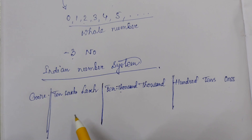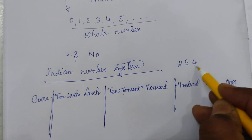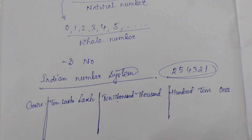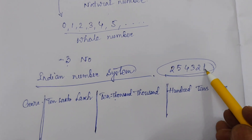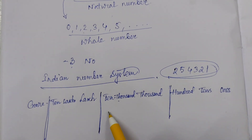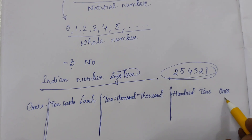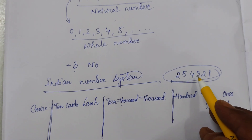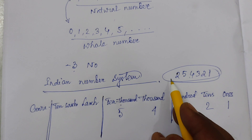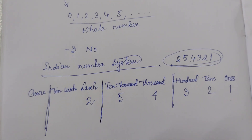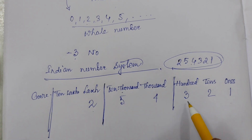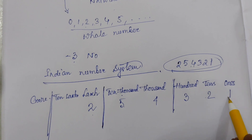Suppose I am writing the number 254321. Now what is the name in the Indian number system? Just put the number from the rightmost, right to left. The first digit is in the ones place: 1, then 2 in tens, then 3 in hundreds, then 4 in thousands, then 5 in ten thousands, then 2 in the lakhs place.